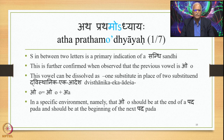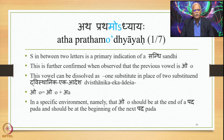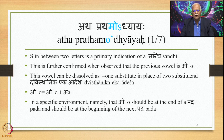So what is the mark? How do we identify that there is a Sandhi here? One simple clue provided in the printed edition is that there is an 'S' in between two letters — this generally wouldn't happen. When S is put in between two letters, that is a primary indication of a Sandhi. This is further confirmed when observed that the previous vowel is O in Prathamodhyayah. We know that this vowel O can be dissolved as one substitute in place of two substituents.